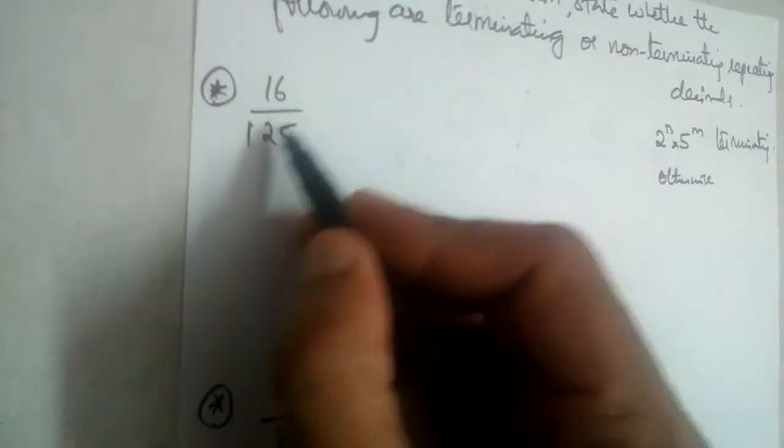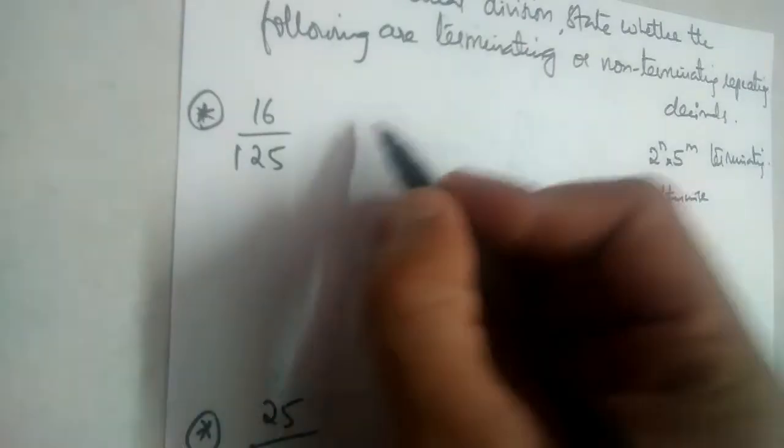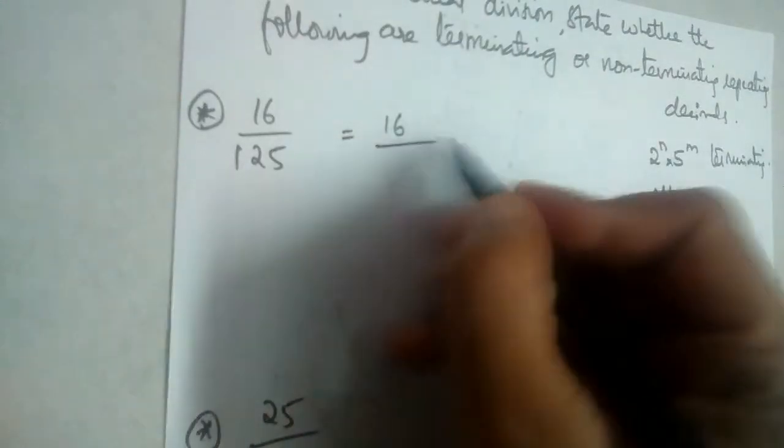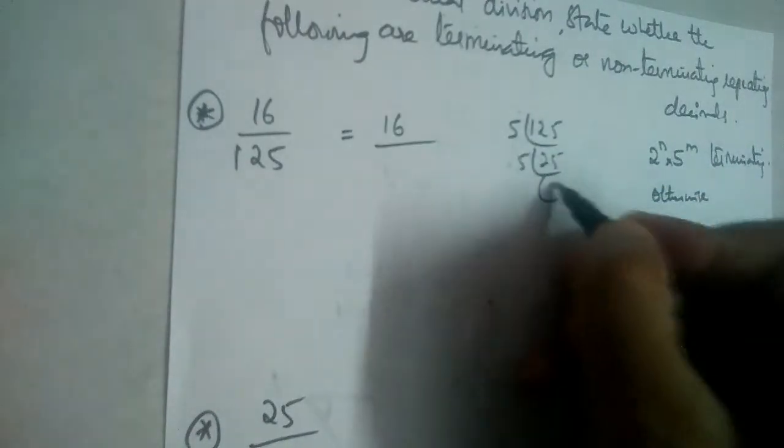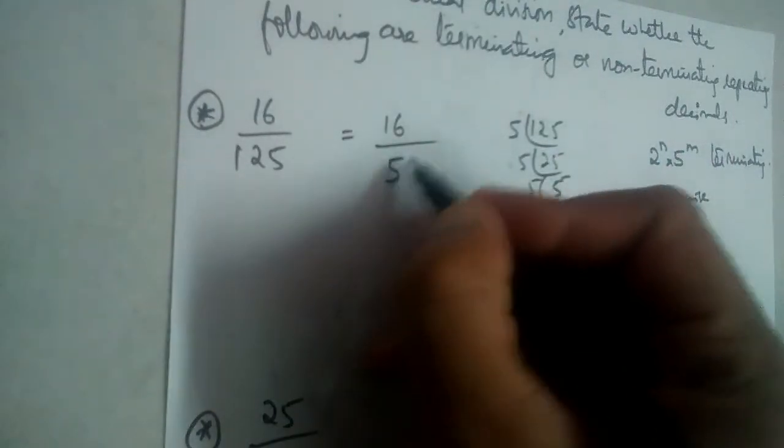So we have a few problems here. 16 by 125. Let us find prime factors of 125. 5 times 25, so this is 5 cube, right?